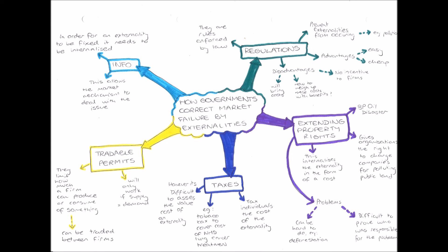The problem with taxes is that it's difficult to assess the value of the externality's cost. For example, smoking causes many different problems — not just lung cancer, but cancers in various places, blood problems, and other issues — so the government doesn't always know how much to charge. Also, not all lung cancer is caused by smoking, making it harder to accurately set the tax level.